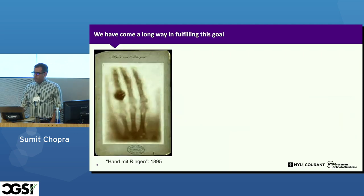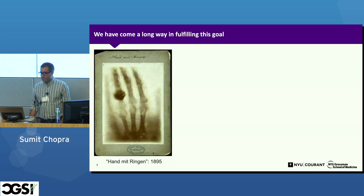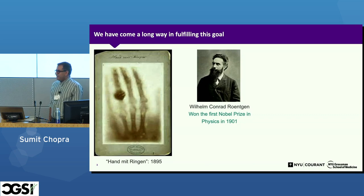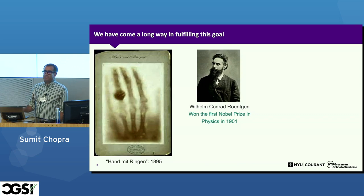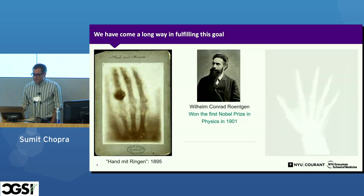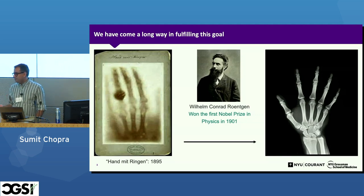We've made good progress since imaging began. This is the first X-ray image of a hand, taken in 1895 by Wilhelm Conrad Röntgen, who won the Nobel Prize for Physics for this work. The blob you see in that image is actually the wedding ring of his wife — it's his wife's hand. And this is what an X-ray image looks like now: highly sharp, where you can see each and every bone very clearly.